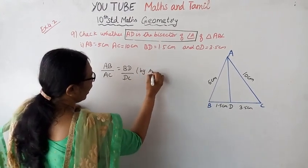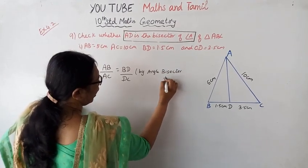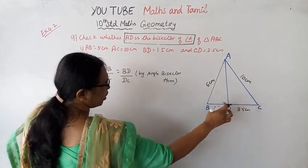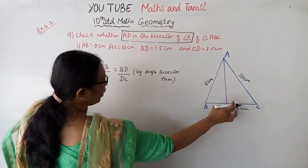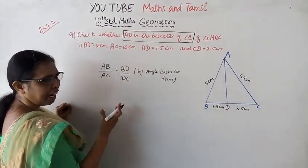Using the angle bisector theorem, if AD is the bisector of angle A, then AB by AC should equal BD by DC.